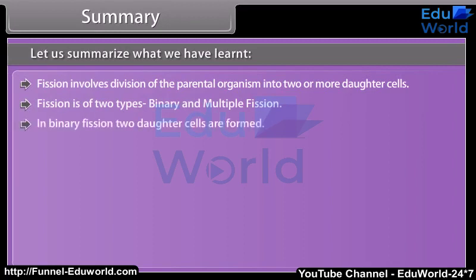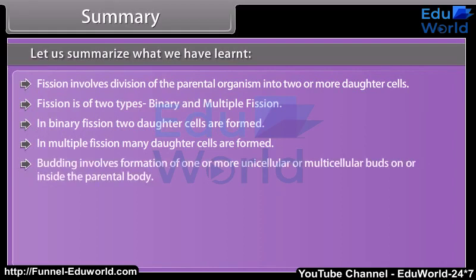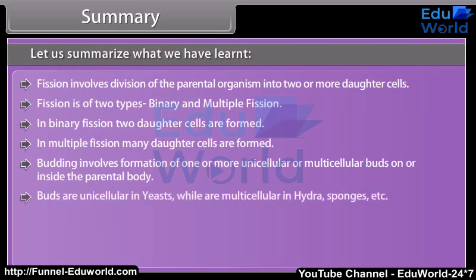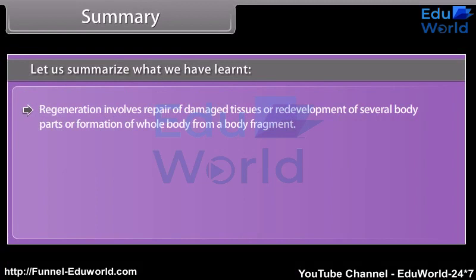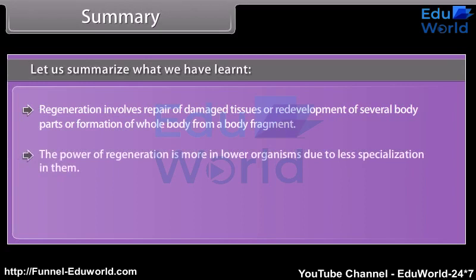In binary fission, two daughter cells are formed; in multiple fission, many daughter cells are formed. Budding involves the formation of one or more unicellular or multicellular buds on or inside the parental body; buds are unicellular in yeasts while multicellular in hydra and sponges, and may be exogenous or endogenous. Fragmentation involves the breaking of the parental body into two or more fragments, each of which develops into an organism. Regeneration involves repair of damaged tissues, redevelopment of lost body parts, or formation of a whole body from a body fragment. The power of regeneration is greater in lower organisms due to less specialization.